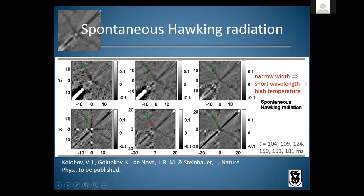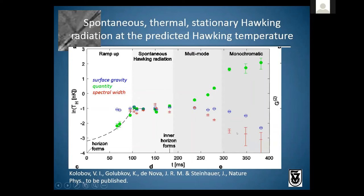Another way to extract the temperature from this band is its width. The narrower the band, the shorter the wavelengths, and that means higher temperature. By that measure we get the red pluses, and in the spontaneous regime they also agree with the surface gravity. So we see that the spectral width of the Hawking radiation is as expected.